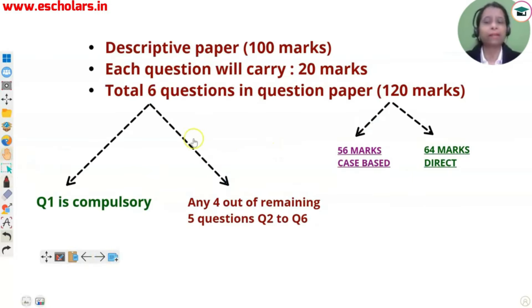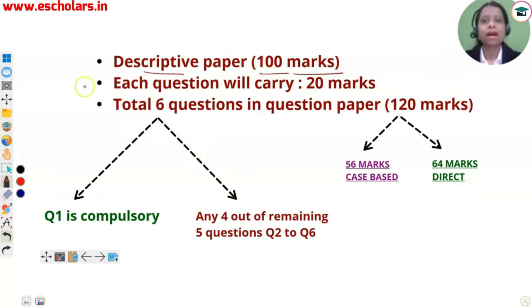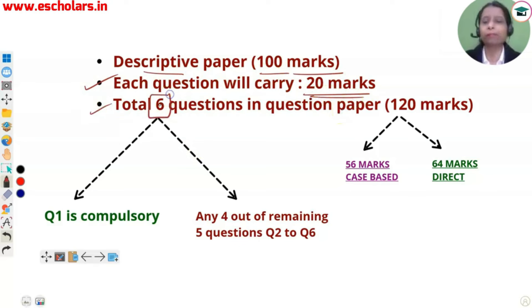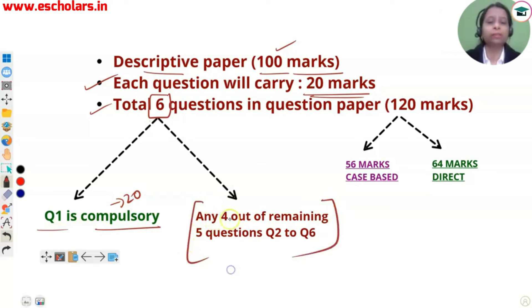Today you will get all your questions and answers. First, let's talk about how the overall structure of the paper is going to be. Your descriptive paper is going to be written for 100 marks. You will get questions of 20 marks each. You will get a total of 6 questions. From those 6 questions, you attempt 4. So it is an open choice — from 5, attempt 4 questions.